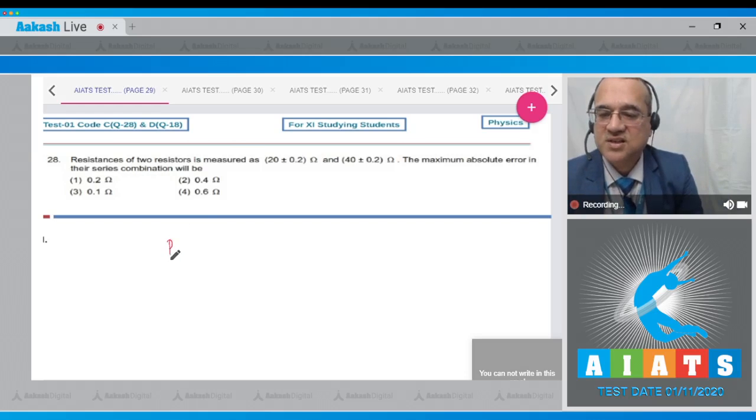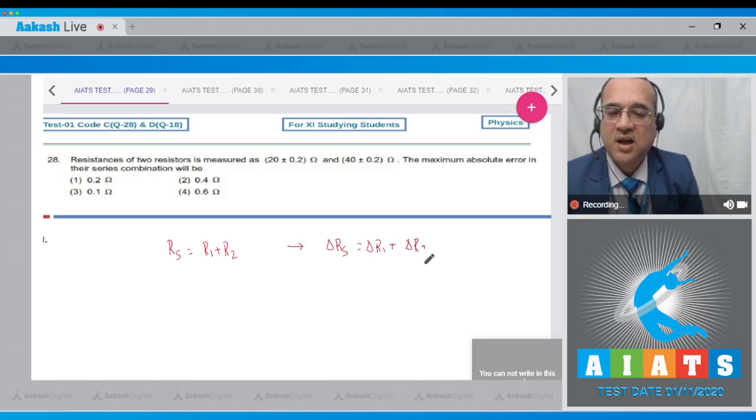Yes students, the series combination resistance is equal to r1 plus r2, and in the combination of errors, the absolute error will be equal to the sum of the individual errors. From the question, delta r1 is given equal to 0.2 ohm and delta r2 is given equal to 0.2 ohm. So fill the value.